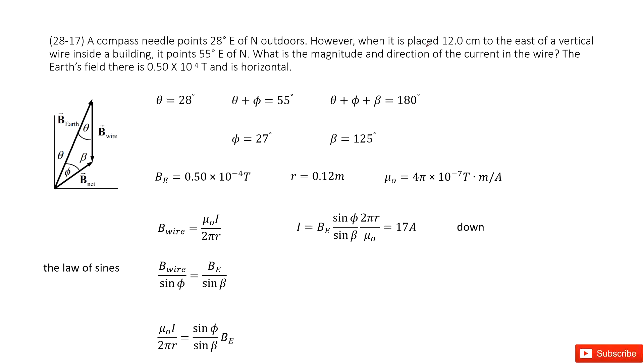However, when it is placed 12 cm to the east of a vertical wire inside a building, it points 55° east of north. In the second case, we need to consider the addition of the Earth's magnetic field and the wire's magnetic field.